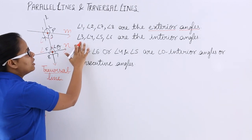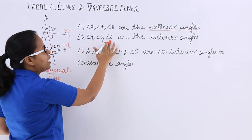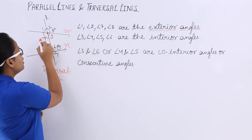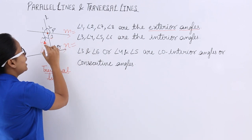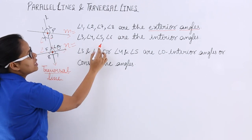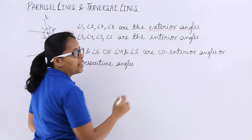Now you can see here angles 3, 4, 5, and 6. These are lying in between M and N. Angles 3, 4, 5, and 6—these are the interior angles.